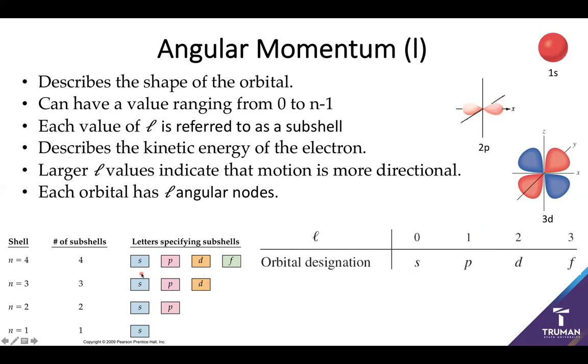We can continue this - n equals four introduces an f subshell where l equals three. When n equals five, we introduce a g subshell where l equals four. This can go further on, but it turns out that no electrons really occupy any subshell greater than f. So these are our main subshells we look at.